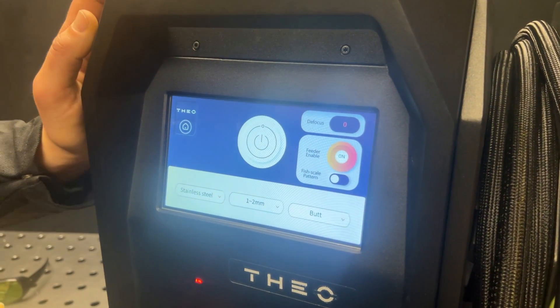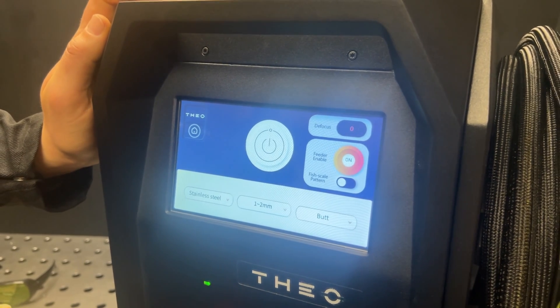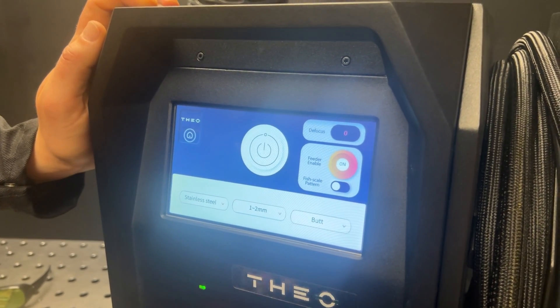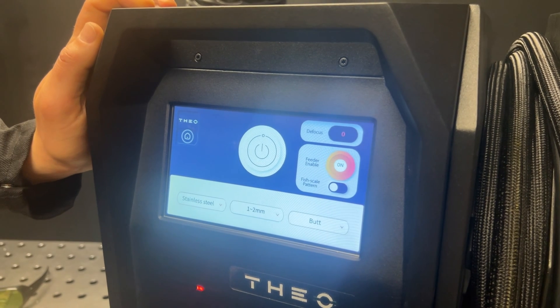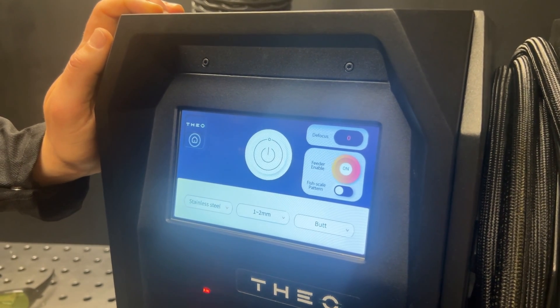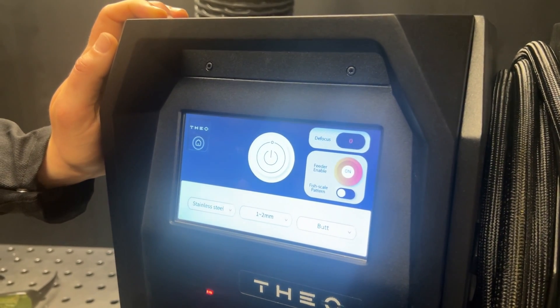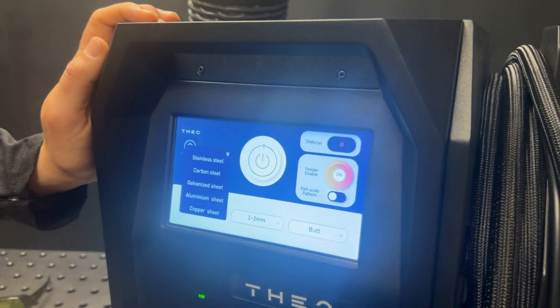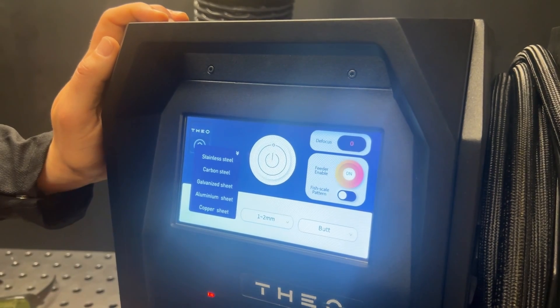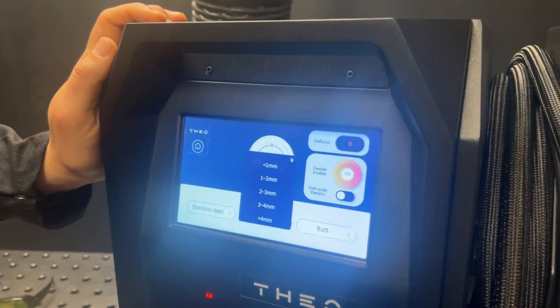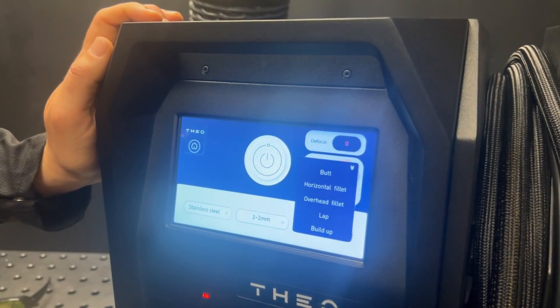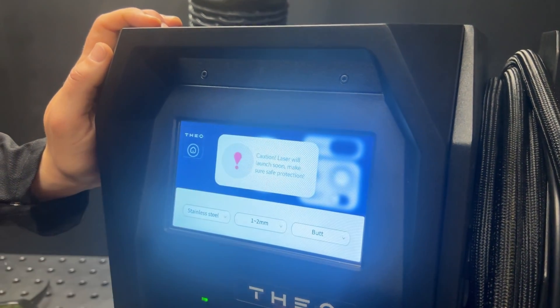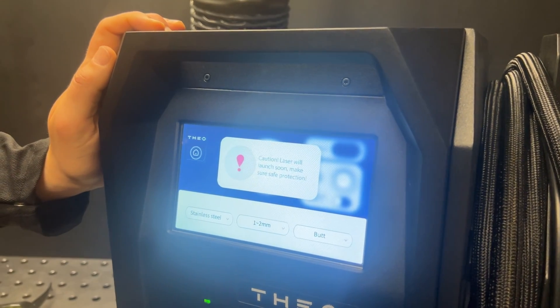So once we get into the setup screen on the Thio, you'll see that it's got a really nice interface, really easy to use. If you've looked at some of the other machines on the market, a lot of them have multiple different switches and areas where you need to kind of memorize different settings or know kind of what range you need to put things in. With the Thio, things are very simple. You tell it what material you're using. You have options for stainless steel, carbon steel, galvanized, aluminum, or copper. What's your material thicknesses? What type of joint you're going to be welding? Once you've got those settings in, you initiate the machine and activate the laser.